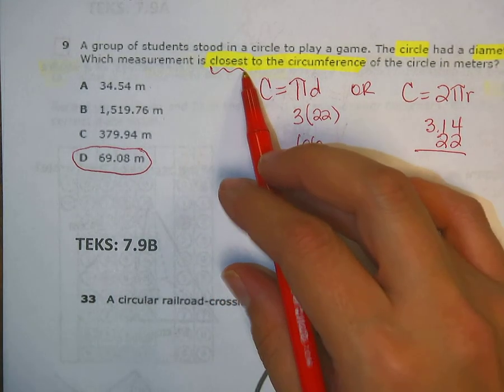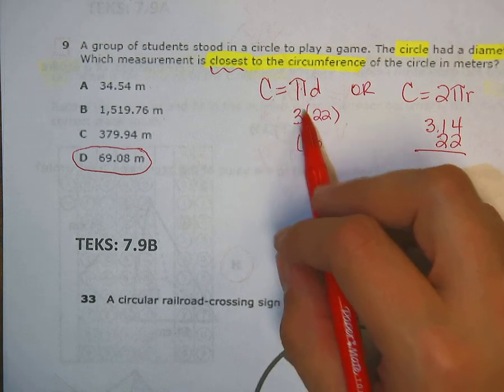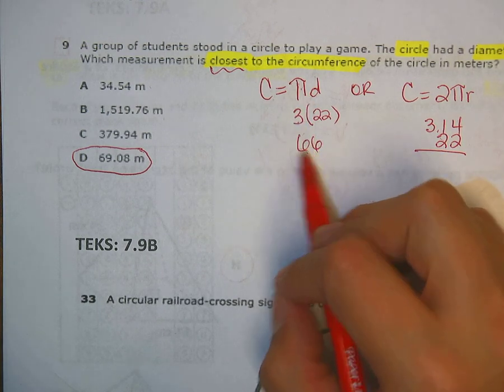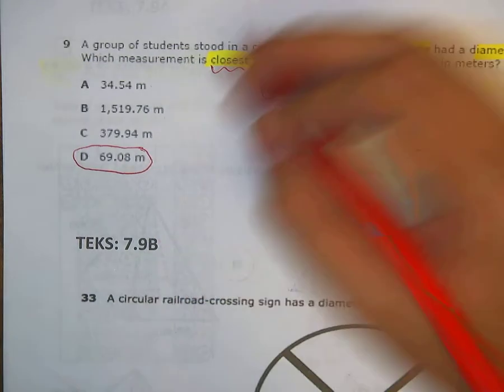But it does say closest to, and keeping in mind I rounded this number down, meaning 66 is going to be a lower answer than my actual answer. So D is correct.